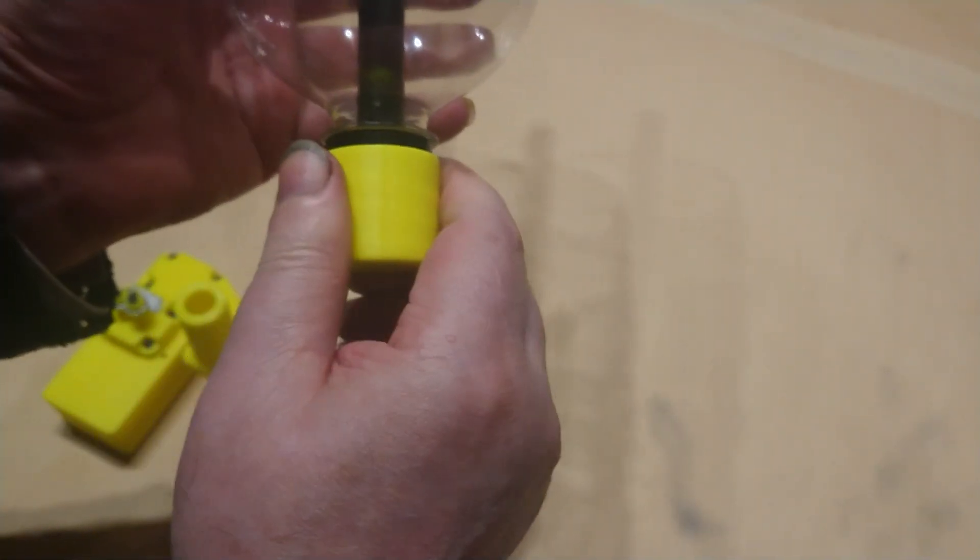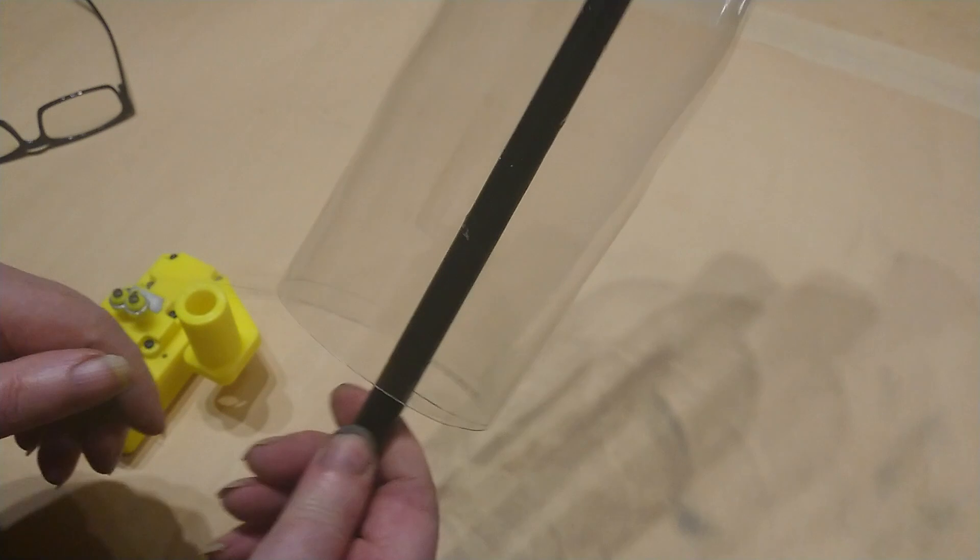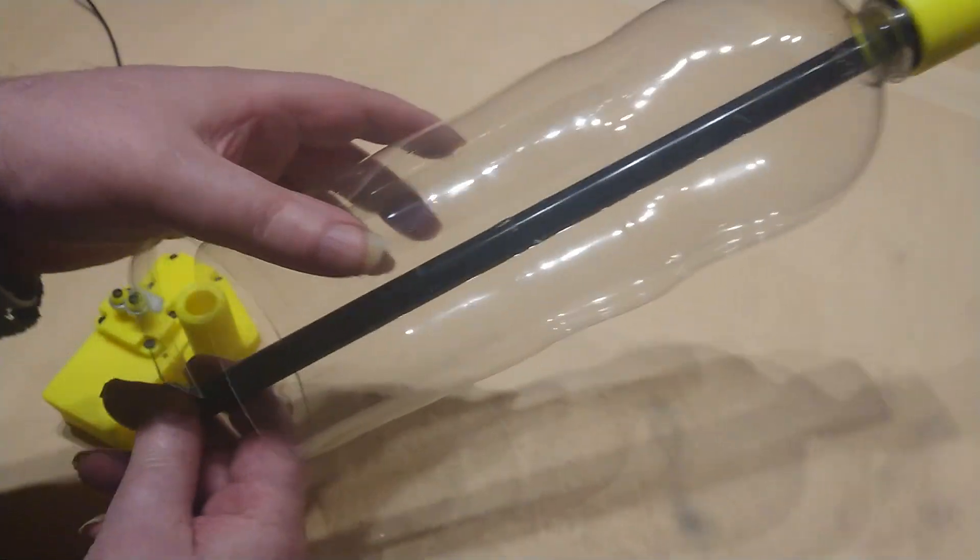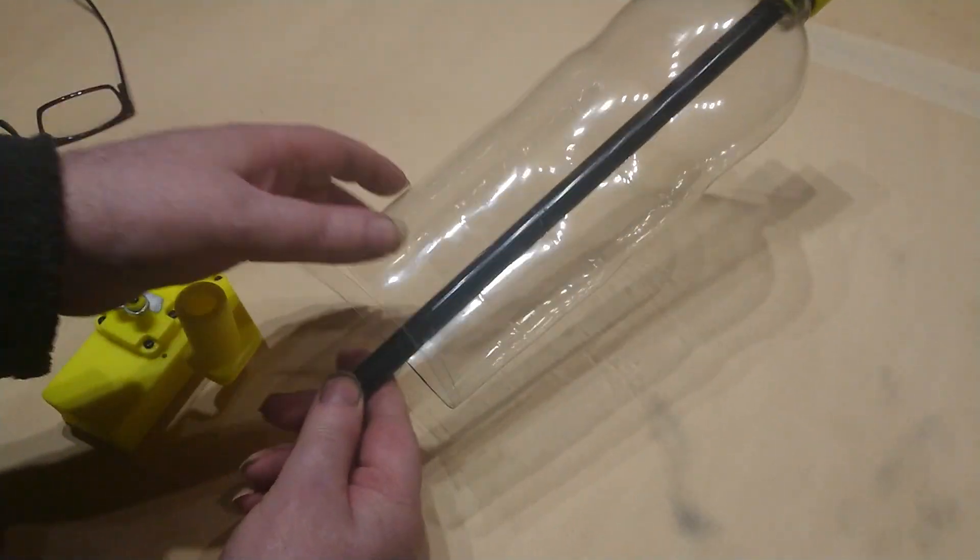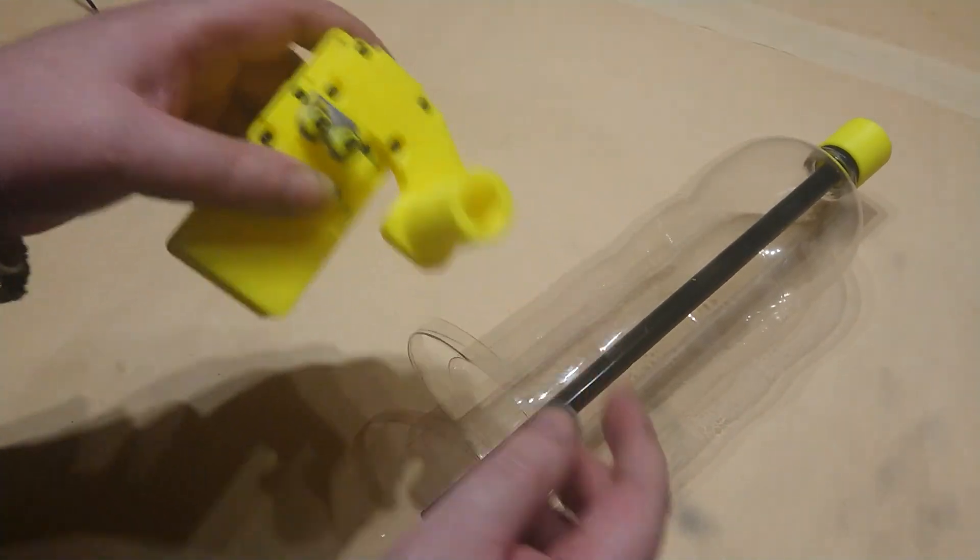And then it'll tighten with just about half a turn. That's the idea of this guide—it holds the bottle straight while it goes through this guide in here, so it goes in this bit like so.